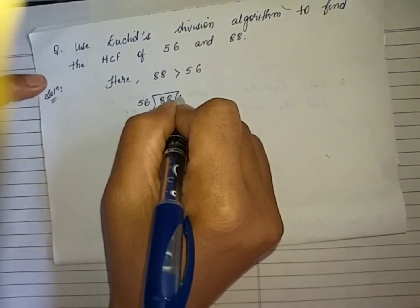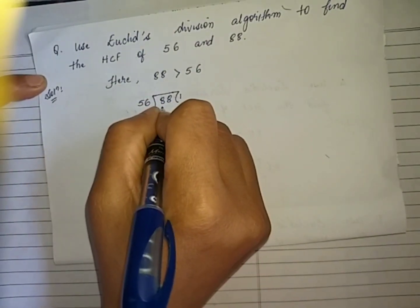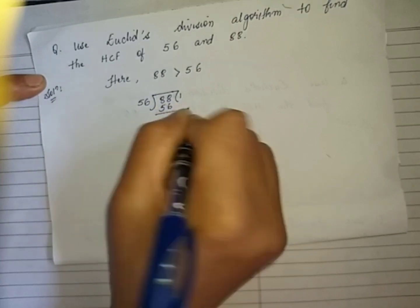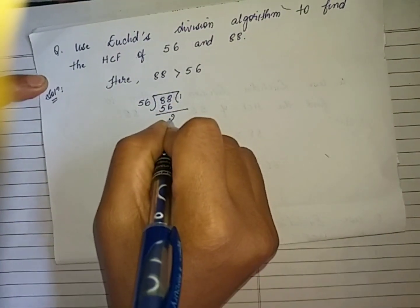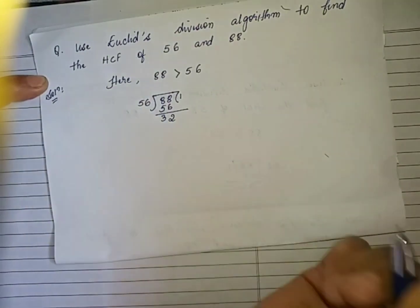56 into 1, we get 56. What is our remainder? 32.